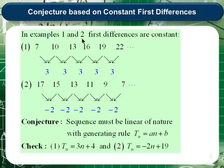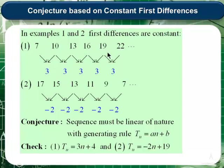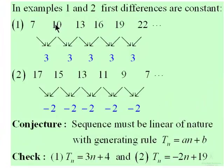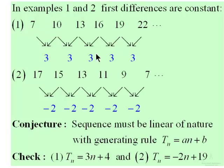Next, we consider a conjecture based on constant first differences. Consider two examples. In example 1, the sequence is 7, 10, 13, 16, 19, 22. The first differences are obtained by subtracting a term from the next: 10 minus 7 is 3, 13 minus 10 is 3, 16 minus 13 is 3, and so on. We can use this to predict the next term: 22 plus 3 is 25. The first differences are constant, equal to 3. In example 2, 15 minus 17 gives minus 2, and 13 minus 15 gives minus 2, so the first differences are constant and always equal to minus 2.